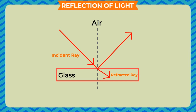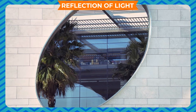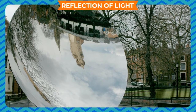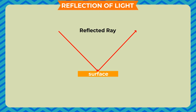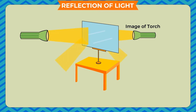Reflection is the phenomenon which causes the formation of images. There are a few basic requirements for reflection: a source of light and a shiny surface from which reflection can take place. The rays that fall on the surface are called incident rays, and the ray reflected from the surface is called the reflected ray. Take a plane mirror with a stand and place it vertically on a table. Direct the light from a torch towards the mirror from one corner of the room.